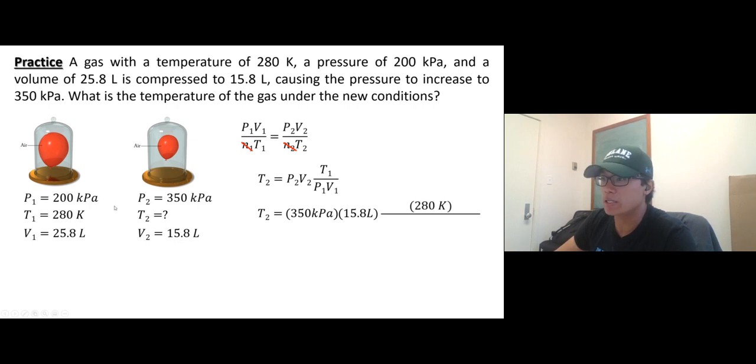P1 is 200 kilopascals and V1 is 25.8 liters. Kilopascals cancel out, liters cancel out. Do the math and you should get that number with three sig figs—300 Kelvin. Shouldn't be that difficult; this is straight math.